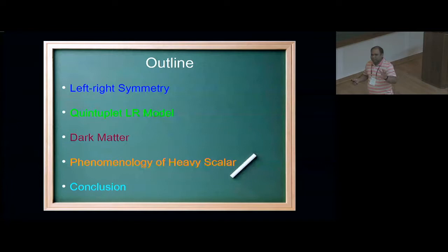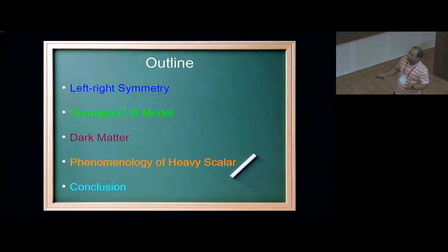So this is a very brief outline of my talk. First, I'm going to tell you about some features of left-right symmetric models. Then I'm going to move on to this quintuplet LR model, which is the topic of this talk. Then I'll tell you about the dark matter candidate in this model, and then the phenomenology of a heavy scalar. And finally, conclusion.